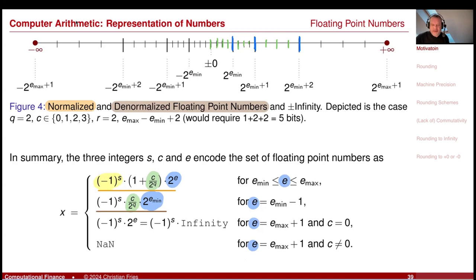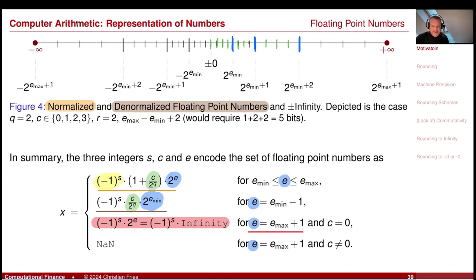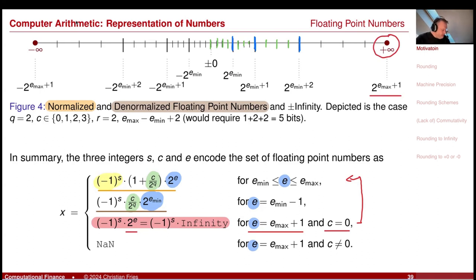In addition there were some special values. Plus or minus infinity can be interpreted as a floating-point number on the axis. When E equals E_max and C equals 0, plugging into the encoding gives exactly 2 to the power of E_max plus 1 — so it is really this last point with a plus or minus. If C is not equal to 0, this encodes error values like the square root of something negative or 0 divided by 0 — this is called Not a Number (NaN).